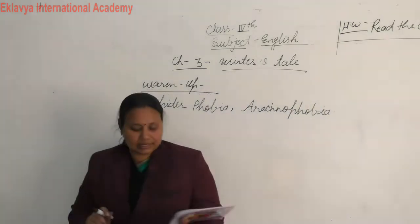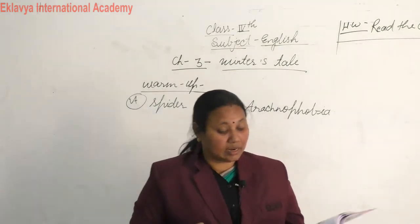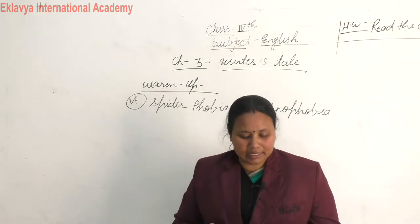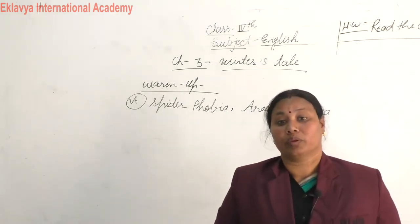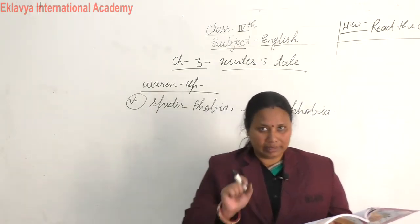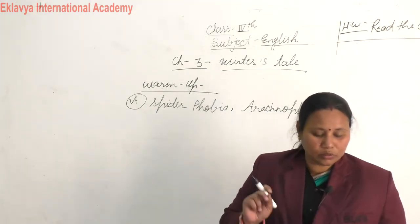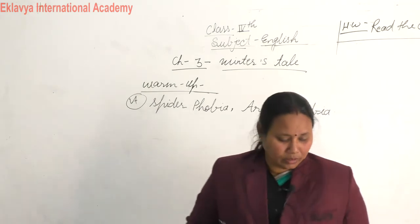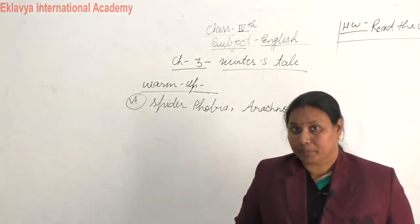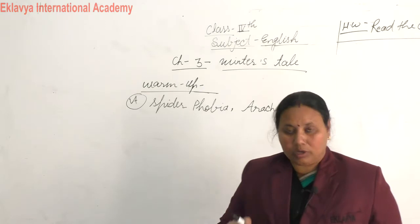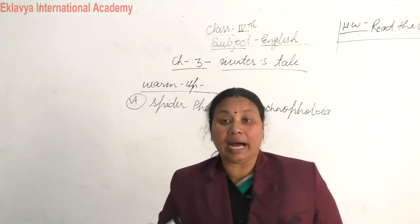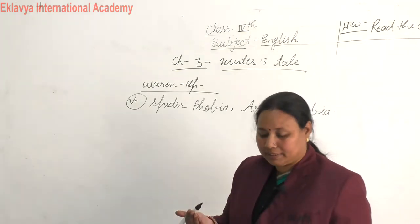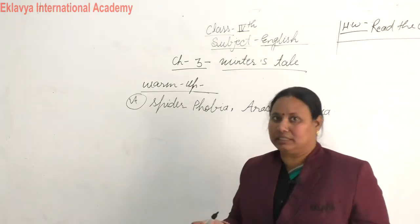Now question B: which animal can survive on a diet that is 99 percent bamboo? I think 50 percent of students know about it, because it is a popular and very cute animal. This is the panda — because pandas are vegetarian and 99 percent bamboo khana hi pasand karte hain.